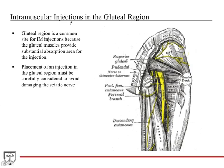The gluteal region is very common for IM injections because the gluteal muscles provide a substantial absorption area for the injection. These gluteal muscles — gluteus maximus, gluteus medius, gluteus minimus — are very large muscles, so there's a large area for the medication to be absorbed into the vasculature. However, placement of an injection into the gluteal region must be carefully considered to avoid damaging the sciatic nerve.